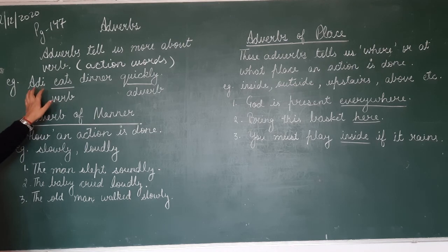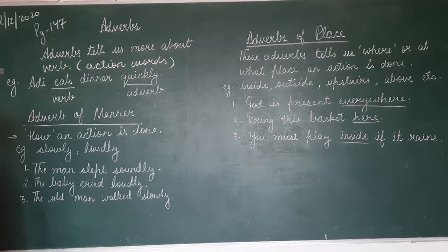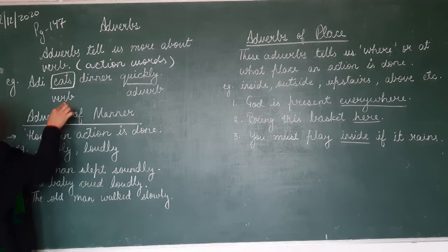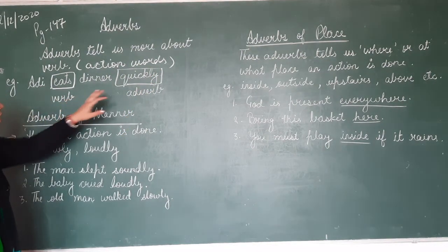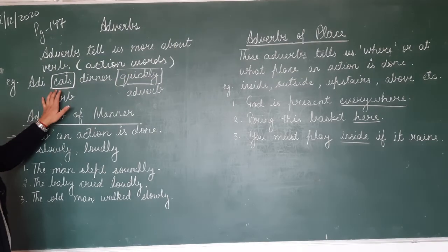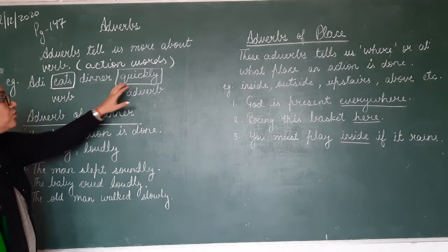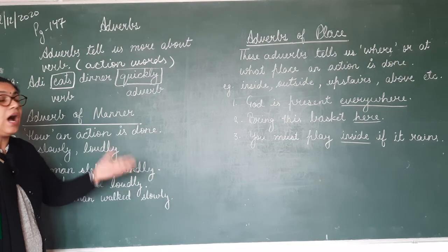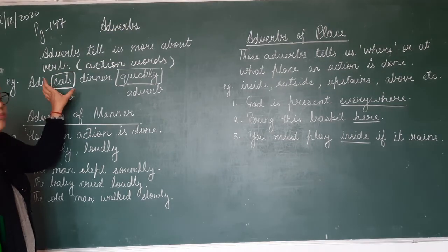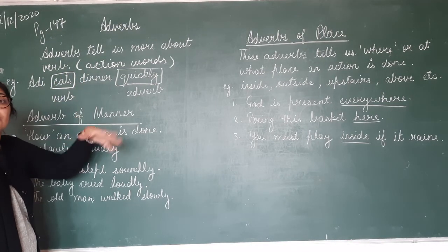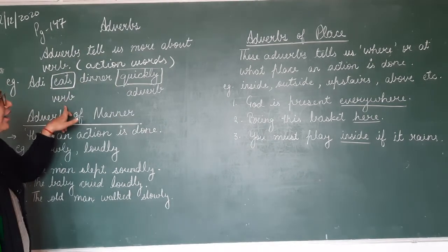Here you can see an example: 'Adi eats dinner quickly.' In this sentence, 'eats' is your verb and 'quickly' is your adverb. Ab jo bhi 'quickly' word hai, yeh aapko 'eat' ke baare mein bata raha hai — ki Adi khaana kaise khata hai. Usne quickly kiya, jaldi kiya. Adi ne apna dinner jaldi kiya. Eat matlab khaya, toh usne apna khana jaldi jaldi khaya. Toh yahan pe adverb ne verb ke baare mein bataya.